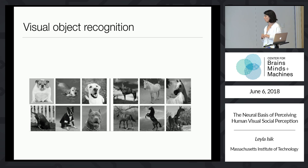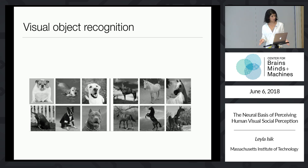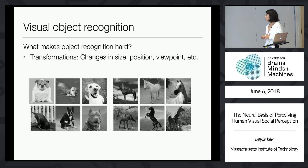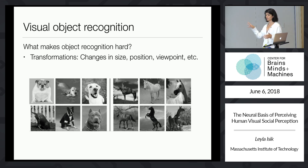If you take a basic visual recognition problem, like trying to recognize the dogs on the left from horses on the right, this probably feels very easy for you. But it's actually an extremely computationally challenging problem. What makes it hard are different transformations — the fact that these dogs all appear in different sizes, positions, viewpoints, et cetera.